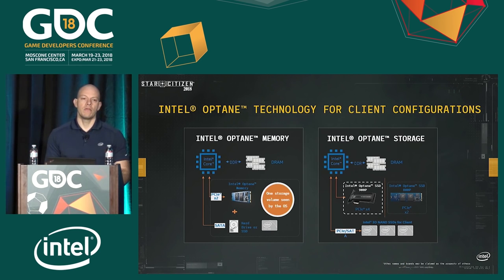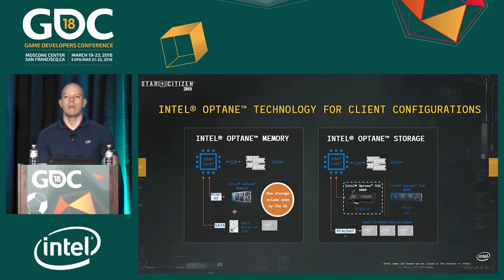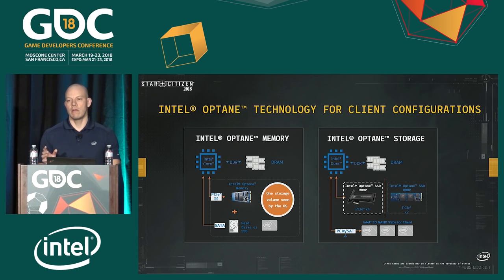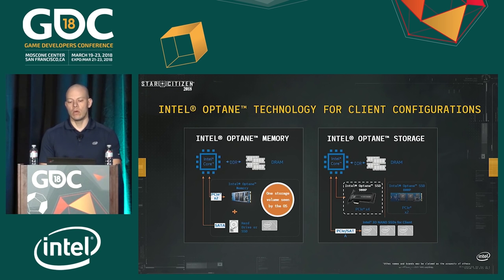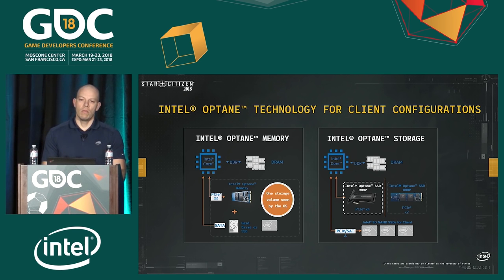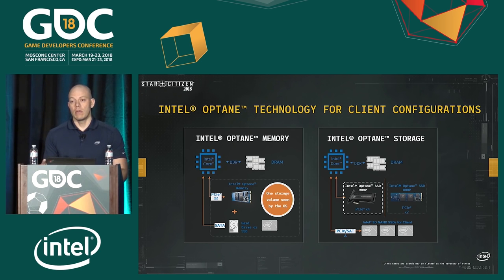There are different types of Optane products for different usages. The first is Intel Optane memory, which is an accelerating device — you pair it with a hard drive to get SSD-like performance. The other two are storage devices. The 800P is more of a day-to-day performance option, and the 900P, which Cloud Imperium used, is designed for performance and endurance.